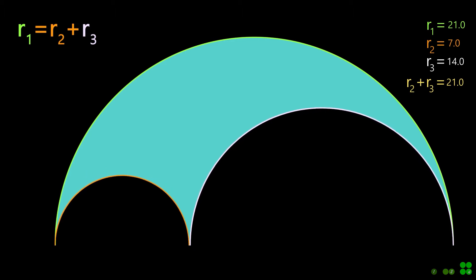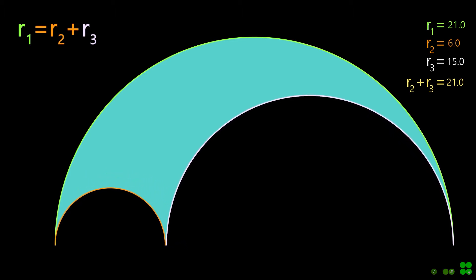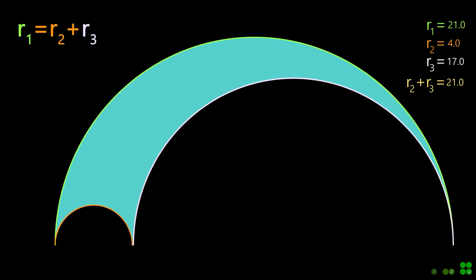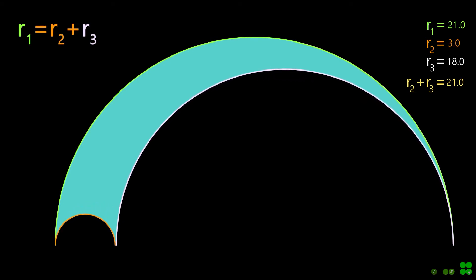Note, the sum of R2 and R3 is always equal to R1, as shown by the example values here.